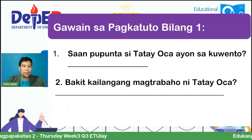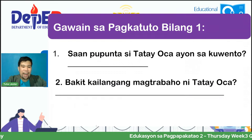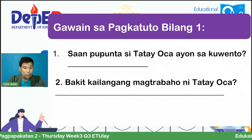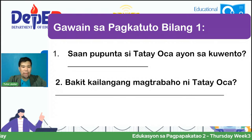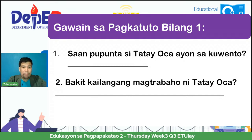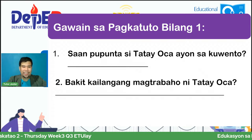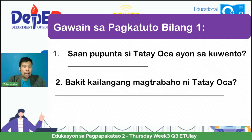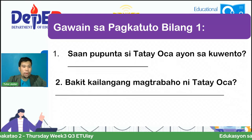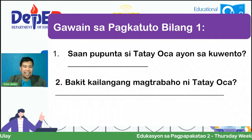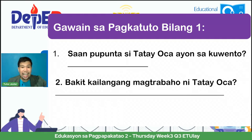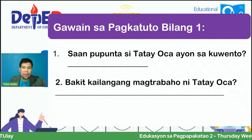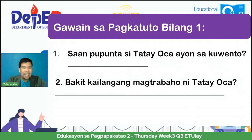Narito ang ating gawain sa pagkatuto bilang isa. Bago natin sagutin ang mga katanungan, batiin muna natin ang ating mga mag-aaral. Watching from Masikalbago, Bagao, Cagayan — naaabot tayo doon. Maraming salamat po, Ma'am Mary Ann. Kay Aliyah Loomis, watching from Lipa, Batangas — good morning po. Si Jeremy Digma, karapatan daw: makapag-aaral at maging mabuting bata. Marami talagang sumasagot sa ating mga katanungan. Balikan natin ang ating kwento at sagutin natin ang ating mga katanungan. Number one: saan daw pupunta si Tatay Oka ayon doon sa kwento?